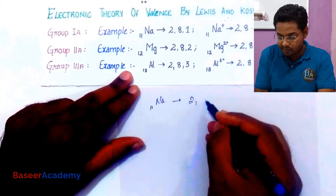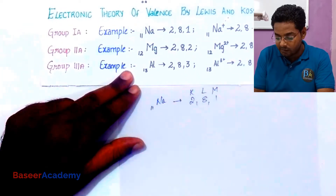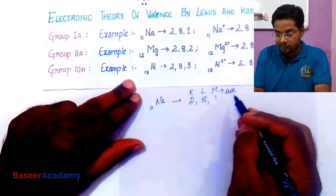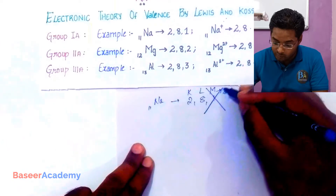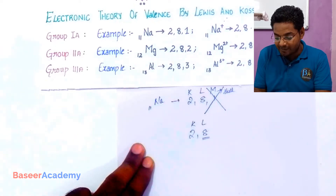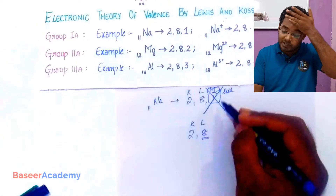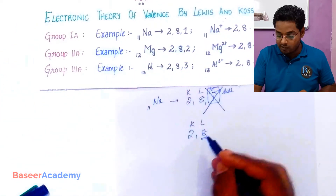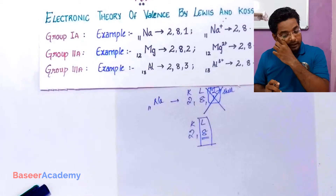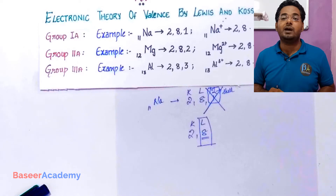Sodium, atomic number 11, has the electronic configuration 2, 8, 1. The first orbit is denoted by K, the second by L, and the third by M. The outermost orbit for sodium is the M shell. Sodium tends to lose its one valence electron so that it is left with eight electrons in the outermost orbit. After losing that electron, the outermost orbit becomes the L shell, which has eight valence electrons.